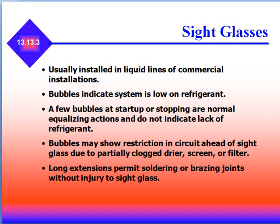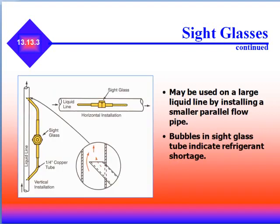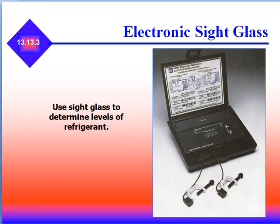Sight glasses are usually installed in liquid lines of commercial installations. Bubbles indicate the system is low on refrigerant or that the refrigerant is fractionating in the lines. A few bubbles at startup and stopping are normal equalizing actions and do not indicate a lack of refrigerant. Bubbles may also show a restriction in the circuit ahead of the sight glass due to a partially clogged dryer, screen, or filter. Long extensions permit soldering or brazing joints without injury to the sight glass. Sight glasses can also be built into the suction line or the liquid line of the filter dryer, and may be used on large liquid lines by installing a smaller parallel flow pipe.